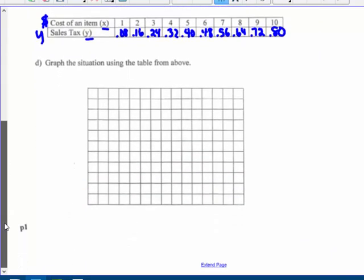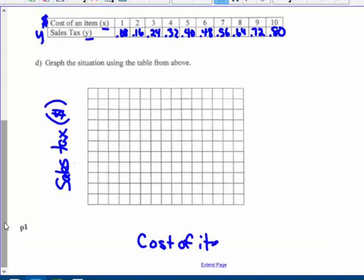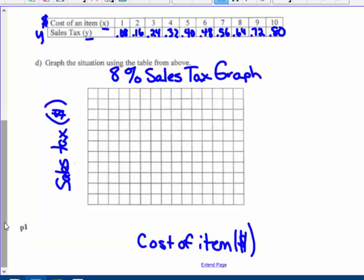Graph the situation using the table from above. I know sales tax is my Y because the table tells me that, and I'm going to put the dollar symbol in parentheses. Cost of the item is also dollars. I'm going to title it 8% sales tax graph. I'm going to go up by 8 cents on the Y-axis.